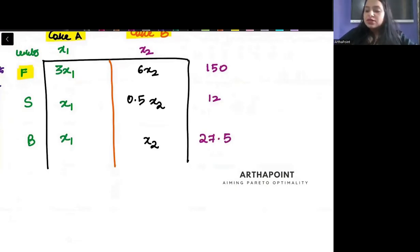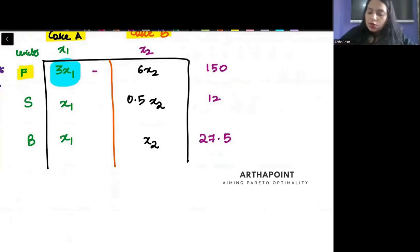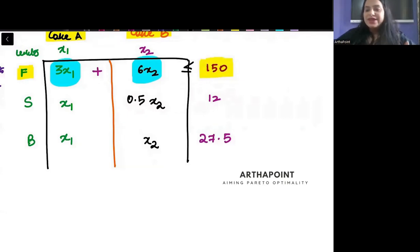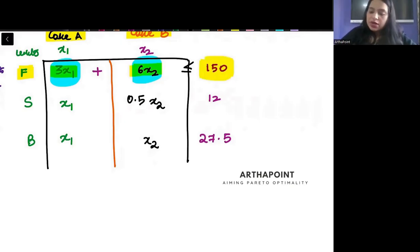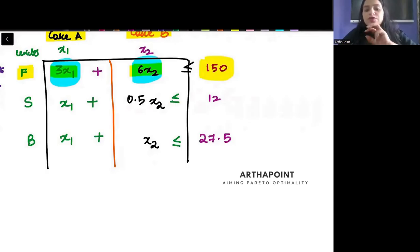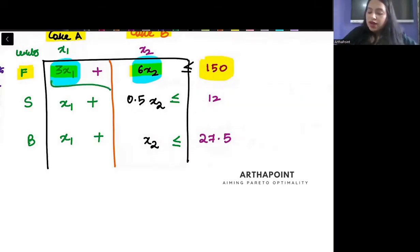Whatever flour is used to produce cake A plus whatever flour is used to produce cake B should be less than or equal to the total flour available, which is 150. Similarly, total sugar used must be less than or equal to 12, and total butter used must be less than or equal to 27.5. So we are putting constraints that total flour, total sugar, and total butter cannot exceed their respective limits.